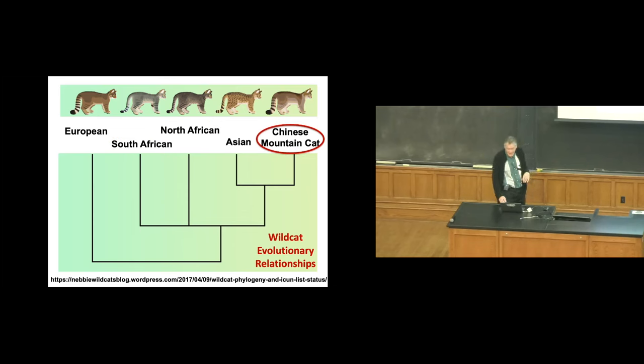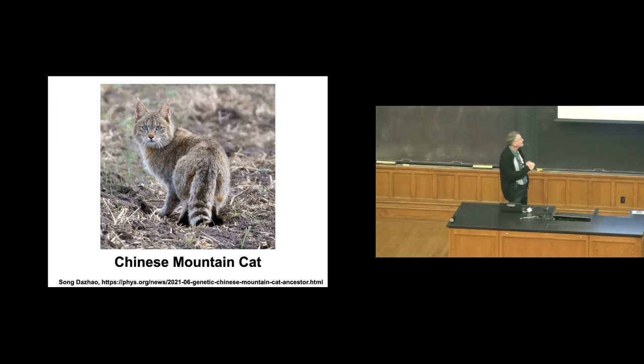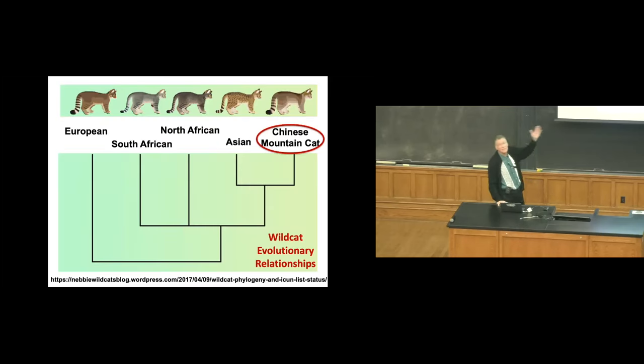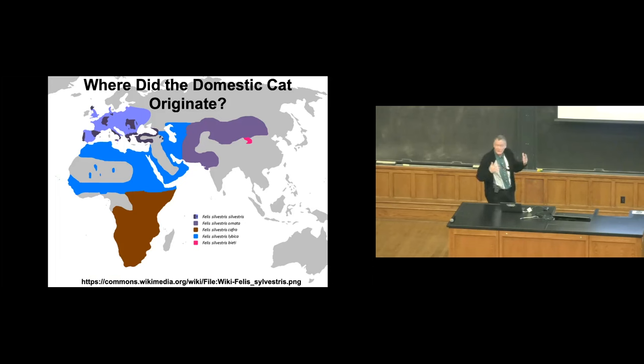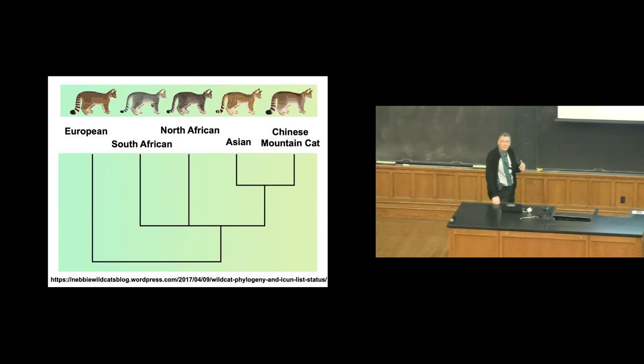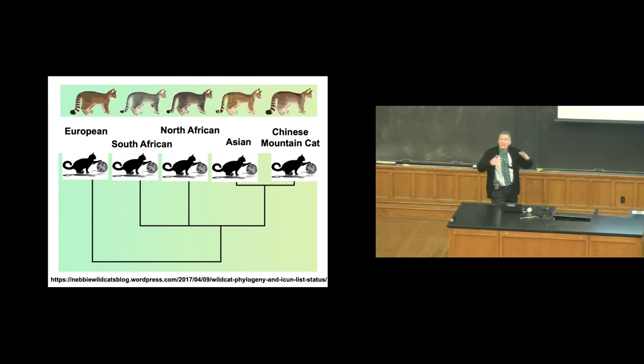So here are the five types of wild cats, their geographic distribution. And then the question, where did the domestic cat originate? Maybe it originated in Europe, maybe in North Africa, maybe the domestic cat was domesticated everywhere. That's actually happened in many species. Dogs, for example, were domesticated from wolves probably at least twice. It's also true of pigs and other domesticated species. So maybe the cat was domesticated multiple times. Well, Driscoll's DNA analysis clearly showed the answer. And that is, the domestic cat is descended from the North African wild cat. In fact, their DNA is barely different.